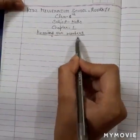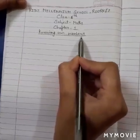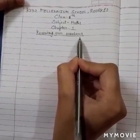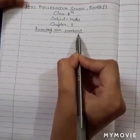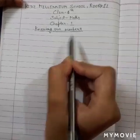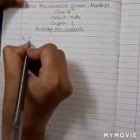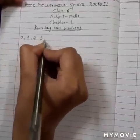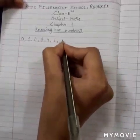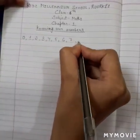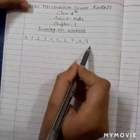Numbers. What are numbers? Numbers play an important role in maths. How do these numbers happen? For this, we need digits. What are the digits? Let's see: 0, 1, 2, 3, 4, 5, 6, 7, 8, 9. These all are your digits.